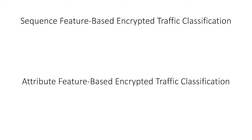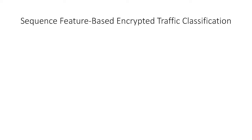First of all, I would like to introduce two kinds of feature-based encrypted traffic classification: sequence feature-based and attribute feature-based encrypted traffic classification. Sequence features widely used in classification include message type sequences and packet length sequences. Many existing works adopt sequence-oriented models, such as Markov chain models and deep learning-based models.